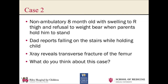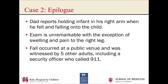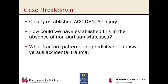Here's what actually happened in this case. Dad on history gives a very clear description of holding the child in his right arm, twisting and falling and landing on the child briefly before they both tumbled down the stairs together. And in fact, it happened in a public venue with five non-partisan witnesses including the security officer who called 911. So in this case, we have a clearly established accidental injury. But that's not usually the story we get — usually it's adult, alone with child, with an injury that is concerning.